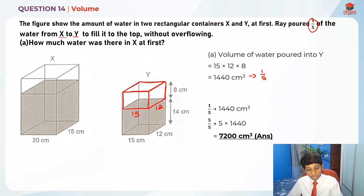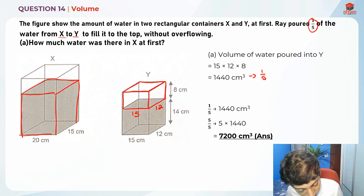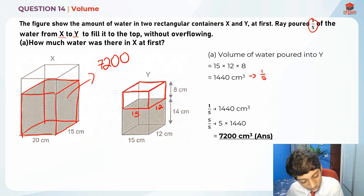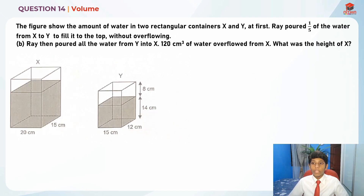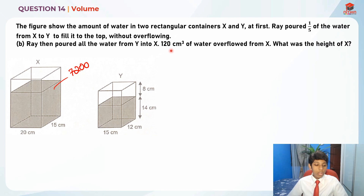So the water in X at first is 7200 cm³. Now that we are done with part A, let's move on to part B. For part B, Ray then poured all the water from Y into X, and 120 cm³ of water overflowed from X. We need to find the height of X.